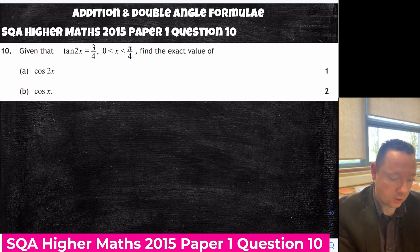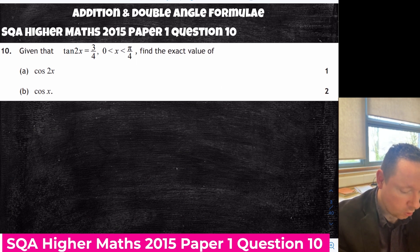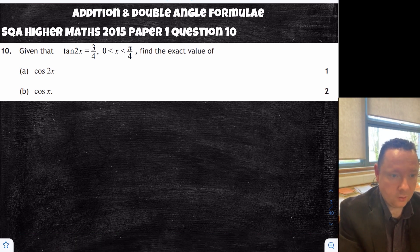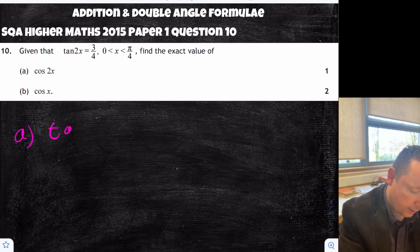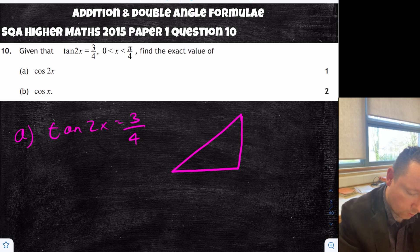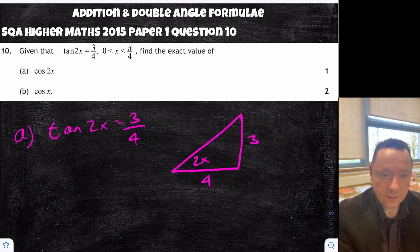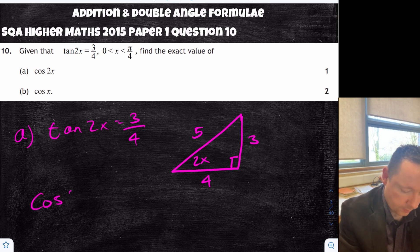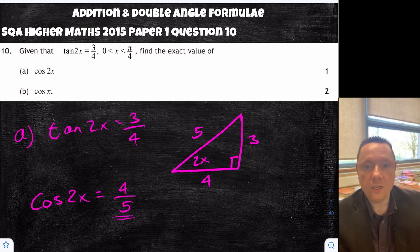Higher Maths 2015 Paper 1 Question 10, addition double angle formula. Given that tan 2x is three quarters, part A: find cos 2x. We know tan 2x equals three quarters, so we can draw a right angle triangle and call this angle 2x, with opposite 3 and adjacent 4. By Pythagoras, 3 squared plus 4 squared is 5 squared — a standard Pythagorean triple. So cos 2x equals adjacent over hypotenuse, which is four fifths.